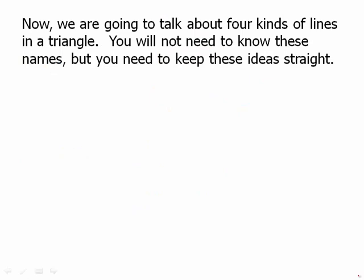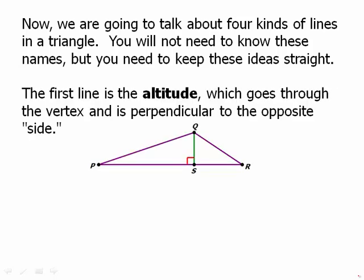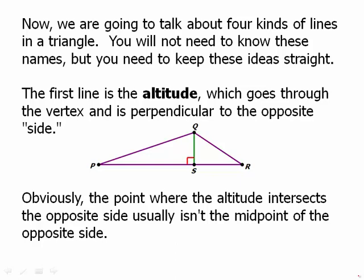Now we'll talk about four kinds of lines in a triangle. You will not need to know these names, but you will need to keep these ideas straight. The first line is the altitude — it goes from a vertex and is perpendicular to the opposite side. Technically, it's perpendicular to the line containing the opposite side if the triangle is obtuse. It definitely goes to the vertex and definitely makes a right angle.